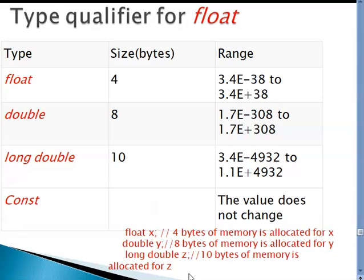Similarly, for float we have type qualifiers as shown here: double, long double, and constant. These sizes—there is a way to compute them. We will try to see if there is time for it.